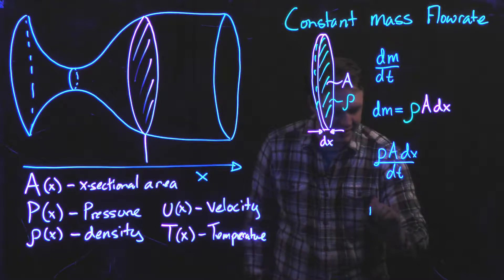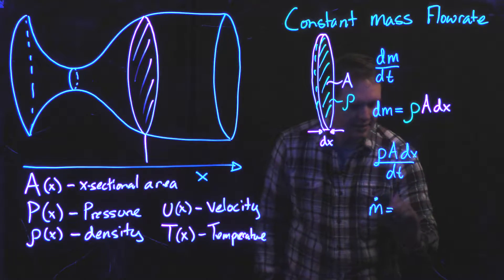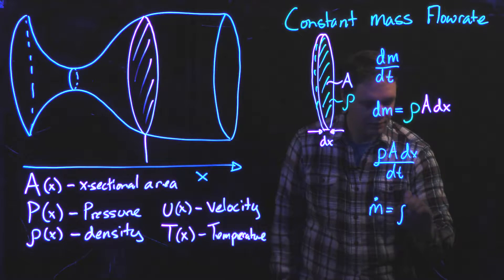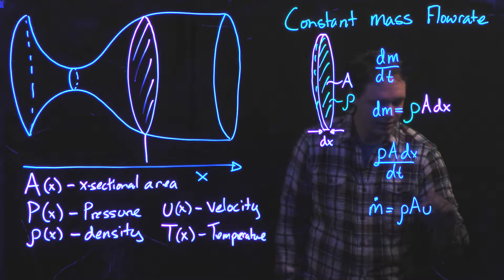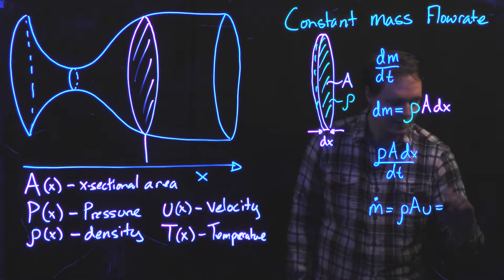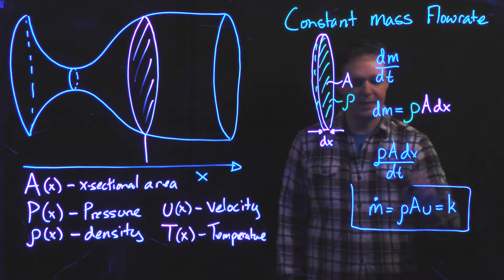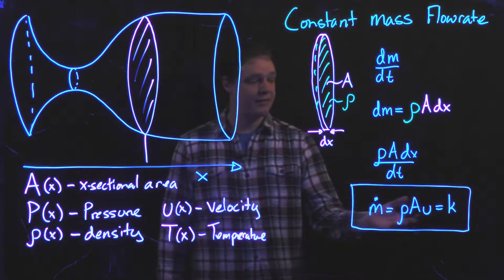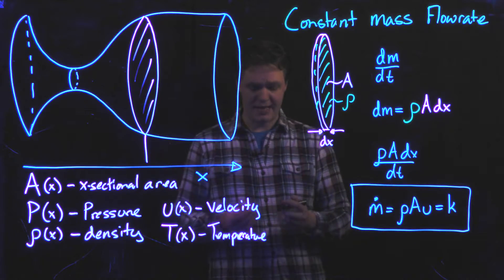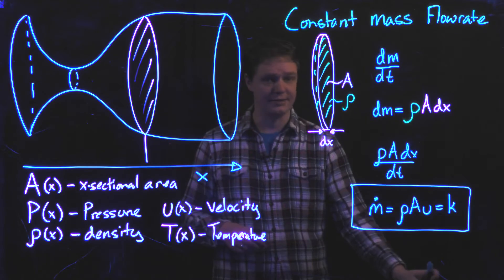This mass flow rate then, ṁ, is equal to ρAU, which is itself some constant k. And so, this is the mathematical consequence of having a uniform mass flow rate through the entire nozzle.